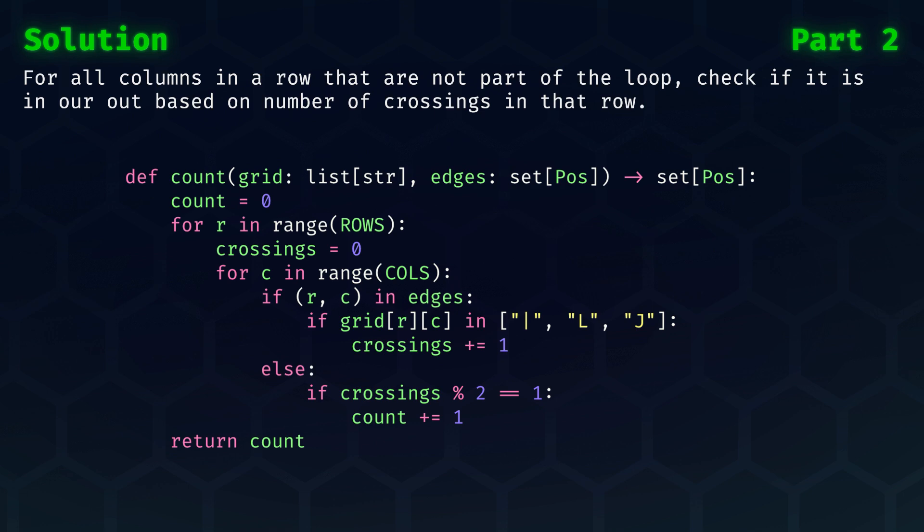If the current field is not part of our loop, then it's either inside or outside. To determine which of the two it is, we just have to check if the number of crossings is odd. And that's it for today's problem.